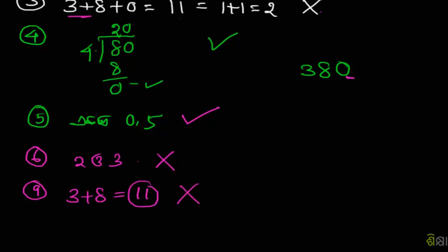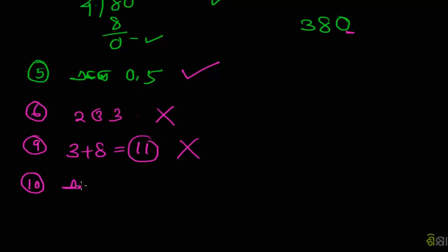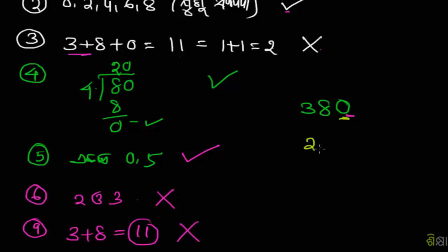For 10, if a number ends in 0, it's divisible by 10.